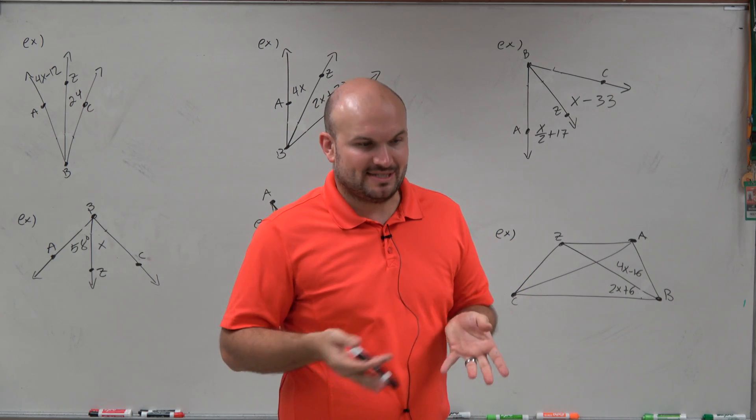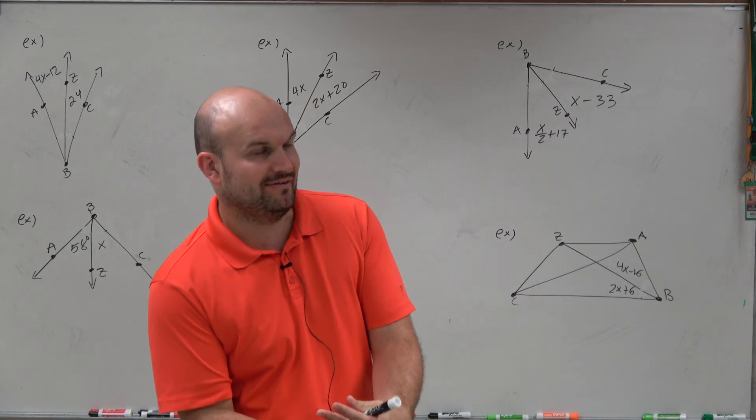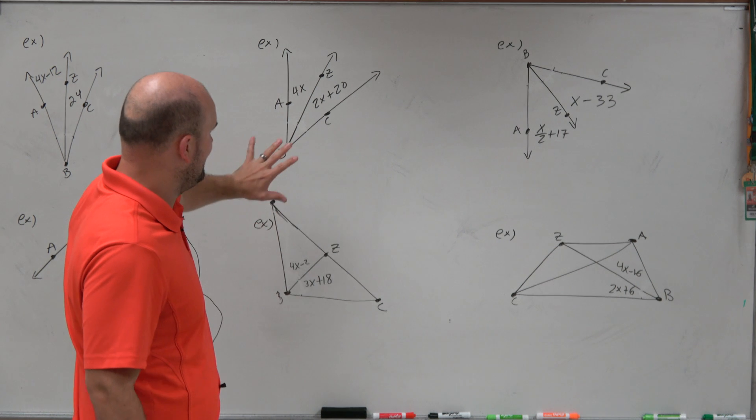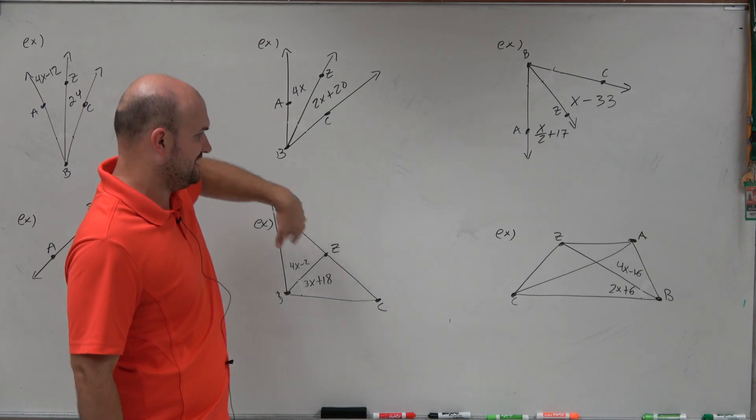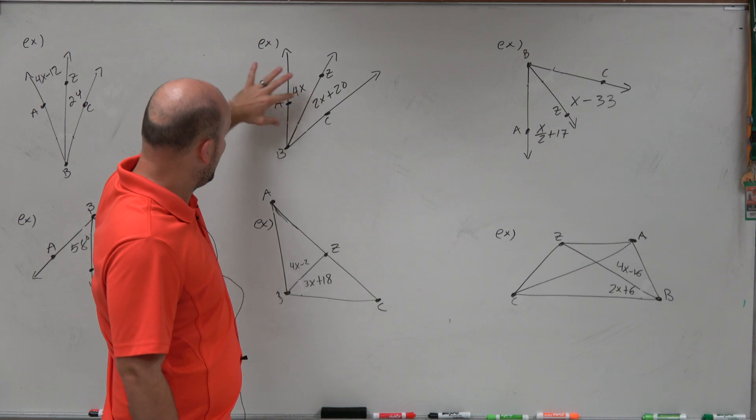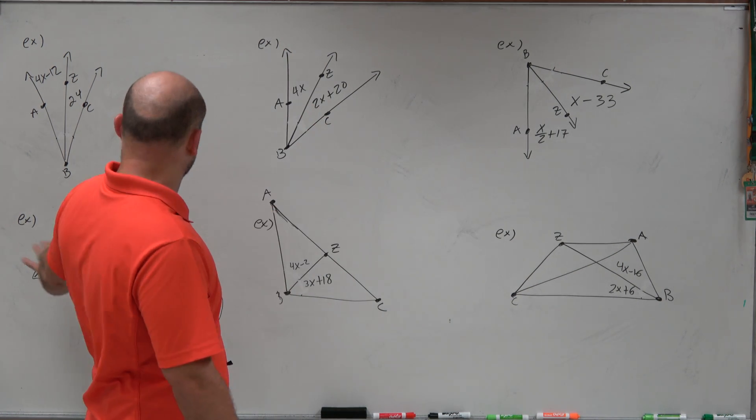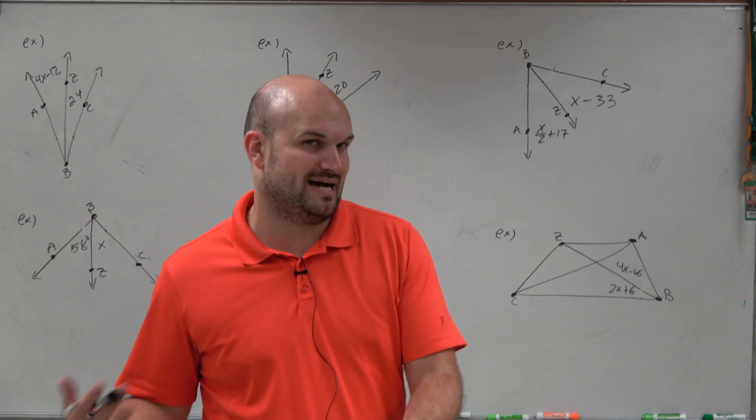When we have an angle bisector, a lot of times this will be information that we're going to be given. So basically I've labeled all of my angles ABC. We're all talking about angle ABC. And then the line BZ, which I think should be correct for all of these, is going to be an angle bisector.